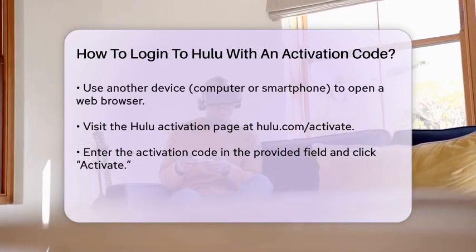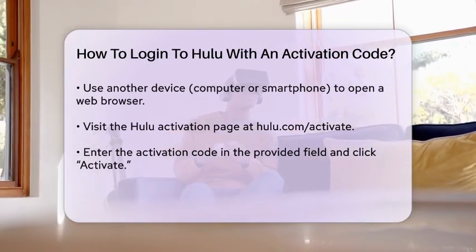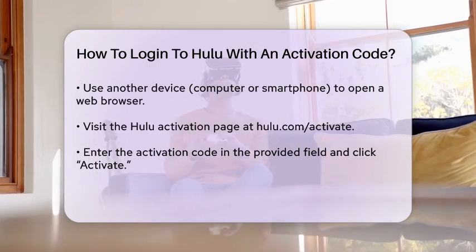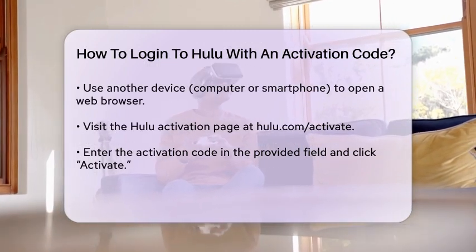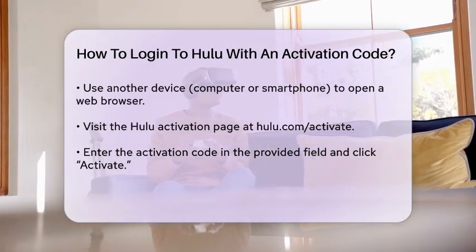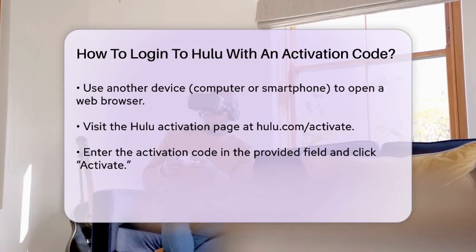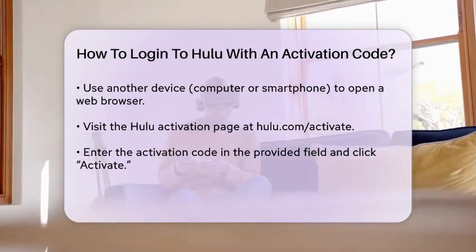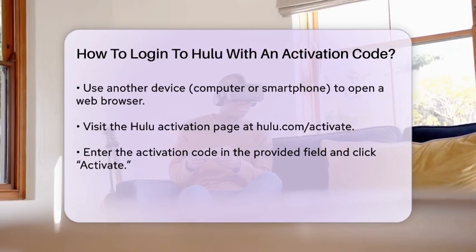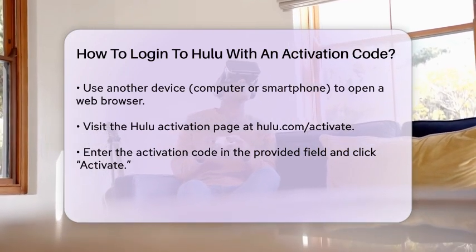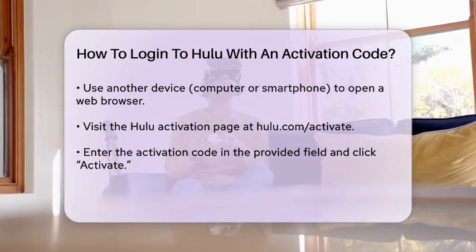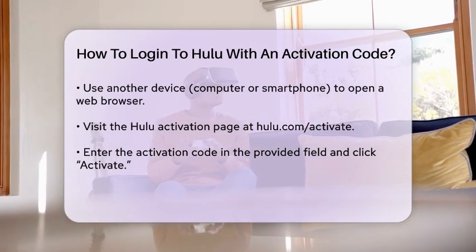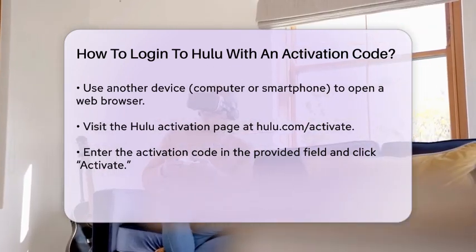Next, grab another device, such as a computer or smartphone, and open a web browser. In the browser, go to the Hulu activation page, which can usually be found at Hulu.com/activate. Once there, you will be prompted to enter the activation code you obtained from the Hulu application. Carefully input the code in the designated field and click on the Activate button.